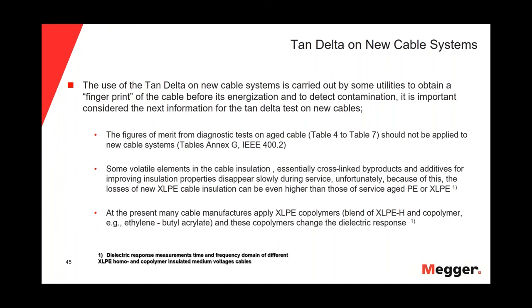The second point is that there are some volatile elements in the cable insulation — essentially cross-linked by-products and additives — that will disappear slowly during service. Because of this, the losses of new XLPE cable insulation can be even higher than those of service-aged PE or XLPE insulations. The last point is that at present, many cable manufacturers apply XLPE co-polymers — to distinguish between homopolymer and co-polymer: an XLPE homopolymer is a pure polyethylene, while an XLPE co-polymer is a blend between XLPE and another co-polymer material such as ethylene butyl acrylate.